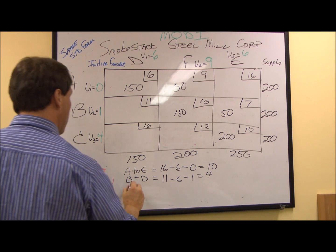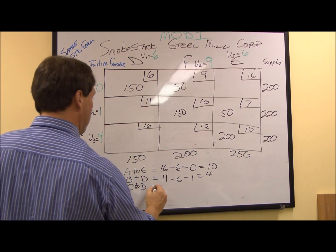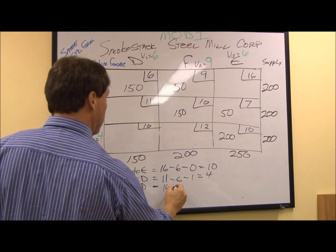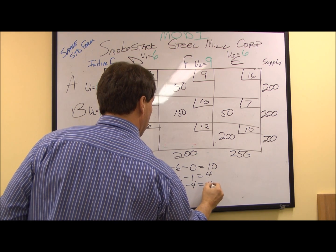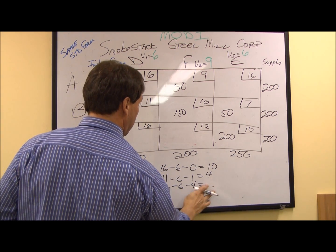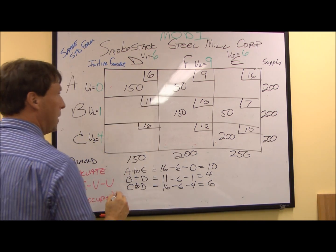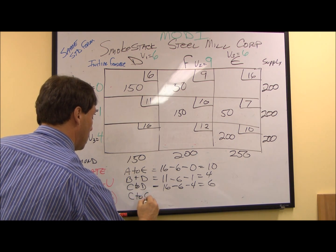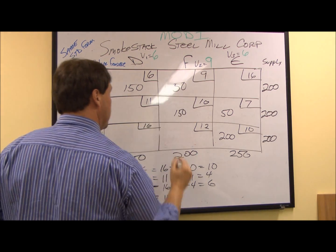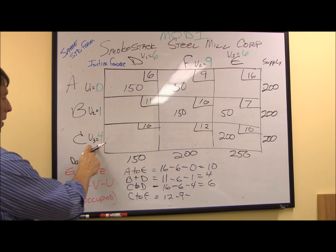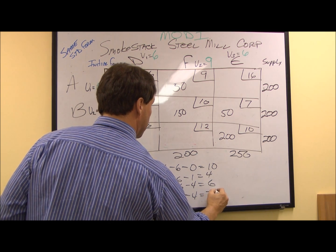Next, we're going to do C to D — Cleveland to Detroit. Our per unit cost is sixteen, minus six, minus four, which equals six. And finally, we're going to evaluate C to F — Cleveland to Fort Worth. Our per unit cost is twelve. Our column index V2 is nine, and our row index U3 is four. So twelve minus nine minus four equals negative one.